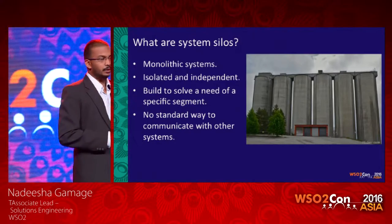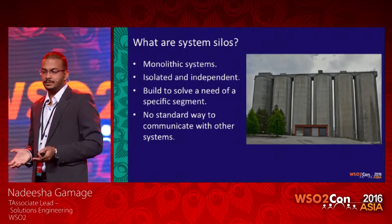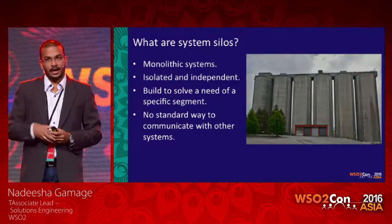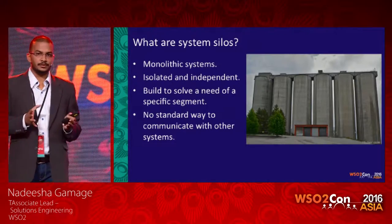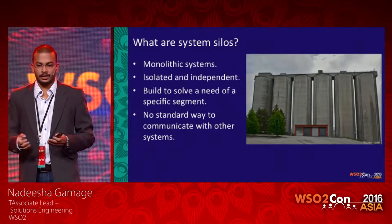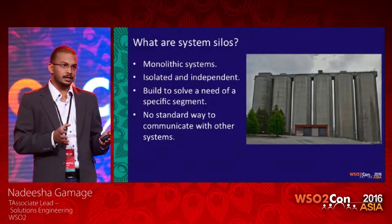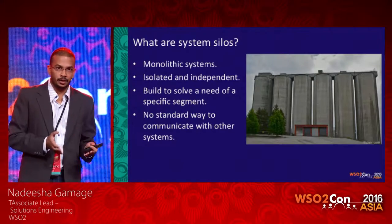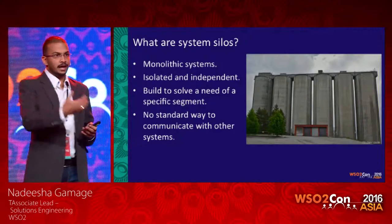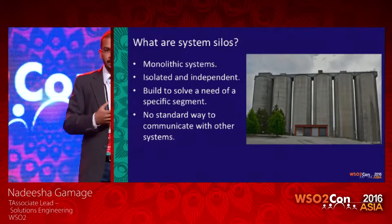System silos are mostly monolithic systems which are large in size, hard to change, and don't change often. They are isolated and independent, mostly working in isolation without talking to other systems, or rarely talking to any other systems within your organization. They are built to solve a specific requirement of a department, and there is no standard way of communication between these systems — no standard interfaces or protocols exposed.